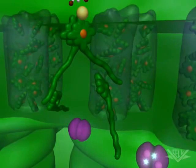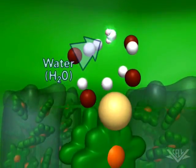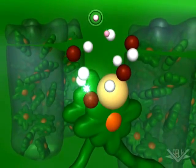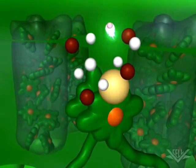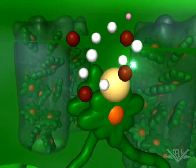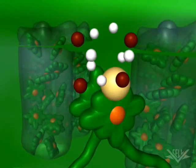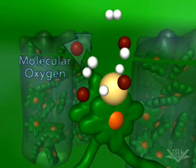The two electrons lost from photosystem II are replaced by the splitting of water molecules. Water splitting also releases hydrogen ions into the lumen. This contributes to a hydrogen ion gradient, similar to the one created by mitochondrial electron transport. After two water molecules have been split, one molecule of molecular oxygen is created.